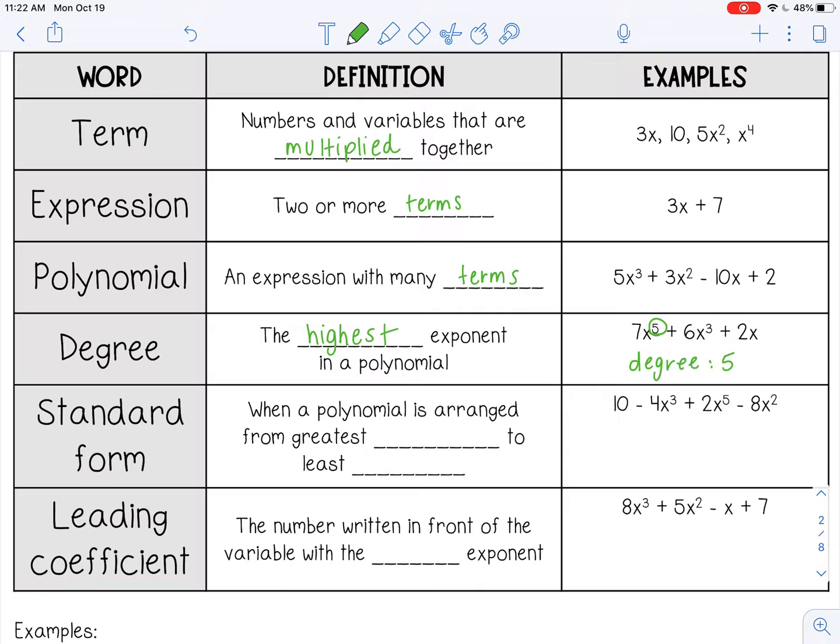Standard form of a polynomial is when a polynomial is arranged from greatest exponent to least exponent.